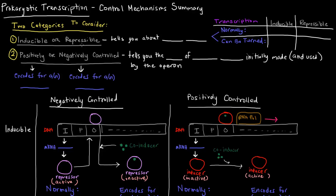Inducible or repressible tells you about the overall system as far as transcription — whether it's occurring or not. An inducible system can be turned on, meaning it's normally off. A repressible system can be turned off, meaning it's normally on. Positively or negatively controlled tells you the kind of regulatory protein that is initially made and used by the operon.